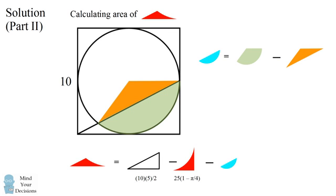In order to calculate these areas, we're going to use formulas for these particular shapes. If we have a circle with radius r and a sector having angle alpha (in radians), then the area of the sector equals r squared times alpha divided by 2. For a triangle with side lengths a, b, and an angle beta between them, its area equals a times b times sine of beta divided by 2.